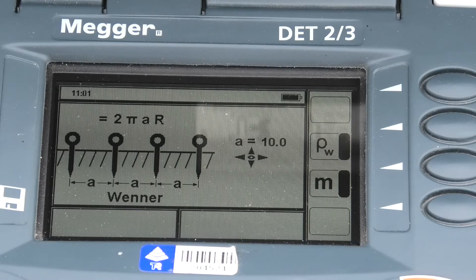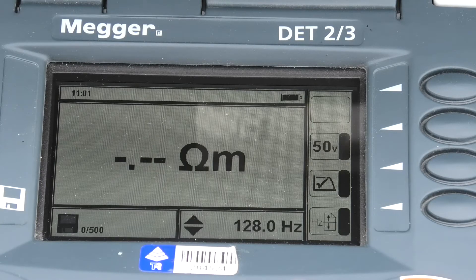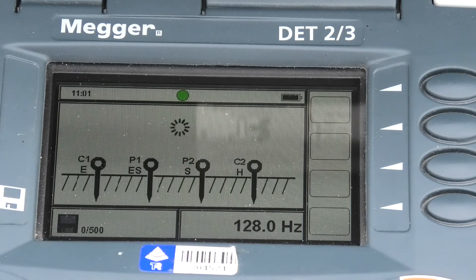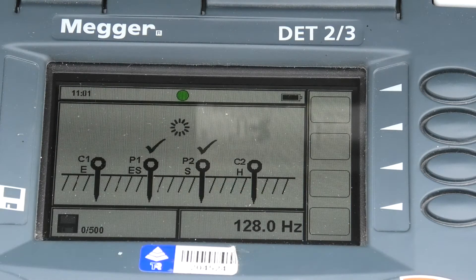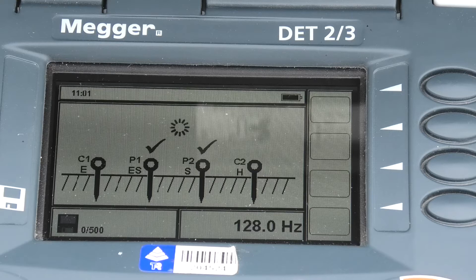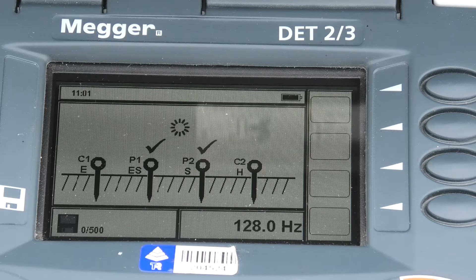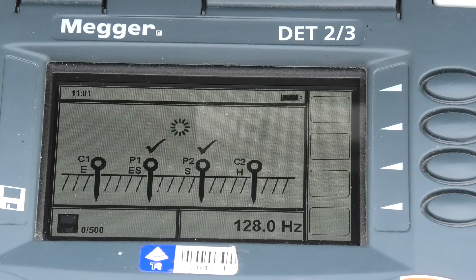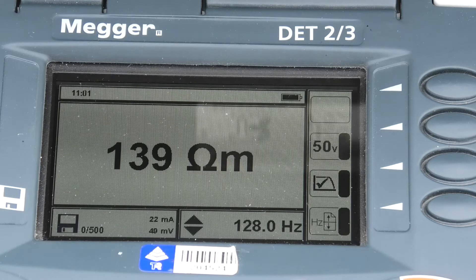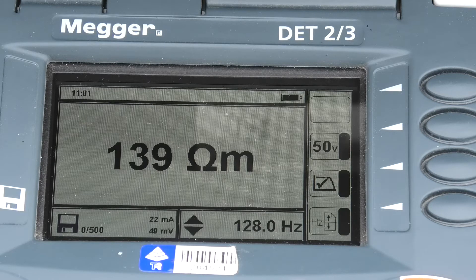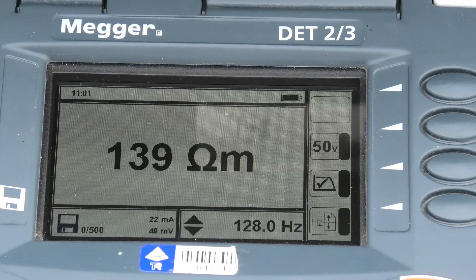Now it's simply a matter of OK, and then hit test. And it checks that everything's set up correctly there. And there, 139 ohm metres. There's my soil resistivity at this point. Now this will change with moisture content of the soil, electrolytes in the soil, all sorts of things.